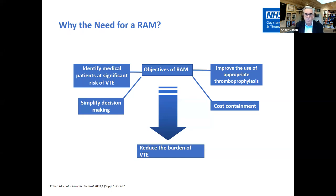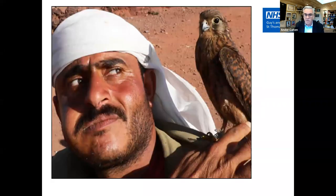Why do we need a RAM? This is a slide I prepared almost 20 years ago and although we've come a long way, not much has changed. The main aim is to identify patients at significant risk of VTE — to improve the use of thromboprophylaxis, contain costs, simplify decision making, and reduce the burden of VTE. Suspicion is the key. If you're not suspecting something, you'll never find it, and having a healthy concern about something happening makes a huge difference.